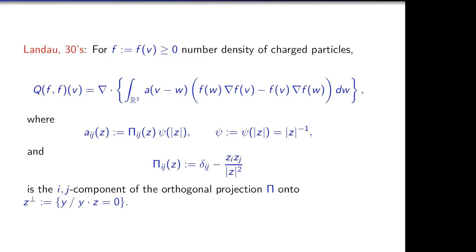Landau's idea was that when particles are charged they interact through the Coulomb potential, and somehow the Boltzmann collision operator cannot be used anymore; one needs to write down a new operator which is not a zeroth-order operator in terms of derivatives but now a second-order operator. You take the divergence of the integral over all possible incoming velocities w, and inside you put a quadratic term representing binary interactions involving f(w)∇f(v) and an extra term minus f(v)∇f(w). This gives a nonlocal second-order operator.